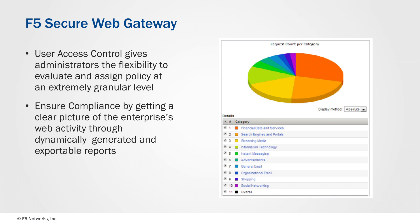Ensuring that policies are enforced and appropriately configured is essential to both compliance as well as HR. In conclusion, with F5 Secure Web Gateway, we have that last piece of the TMG replacement puzzle. Whether you're looking to replace reverse proxy, layer 3, layer 4, or even layer 7 firewall functionality, or forward proxy, F5 has a solution for you.